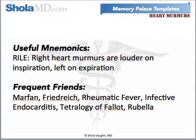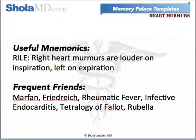Here are some useful mnemonics for cardiac murmurs: RILE — it helps you remember that right heart murmurs are louder on inspiration and left on expiration. Frequent friends are the recurring images that will appear in a few different places in your overall palaces, so it's good to make them vivid and become familiar with them. For example, Marfan syndrome is in my aortic regurgitation room, but he's a frequent friend — I have a single image and use him every time. It was a patient I saw first year who was very striking with a classic Marfanoid appearance, including two rows of teeth. So every time I have something related to Marfan, he's there, and it's easy to scan my palaces mentally across every organ system — aortic regurgitation, Berry aneurysms, and more.